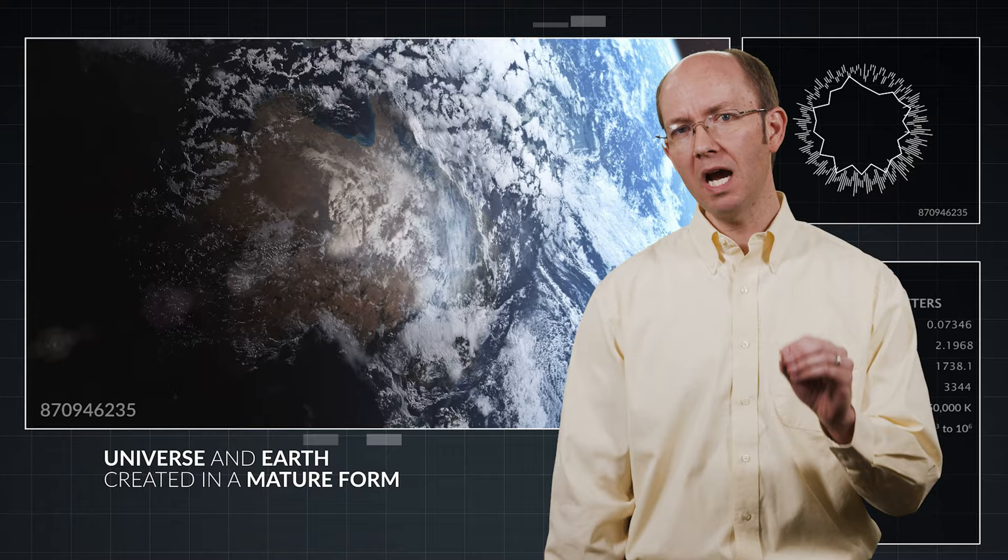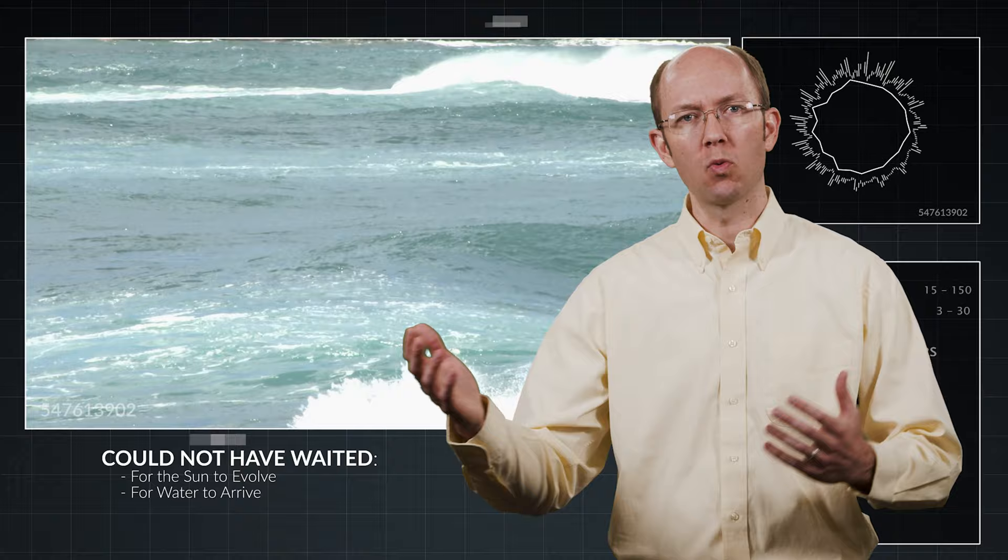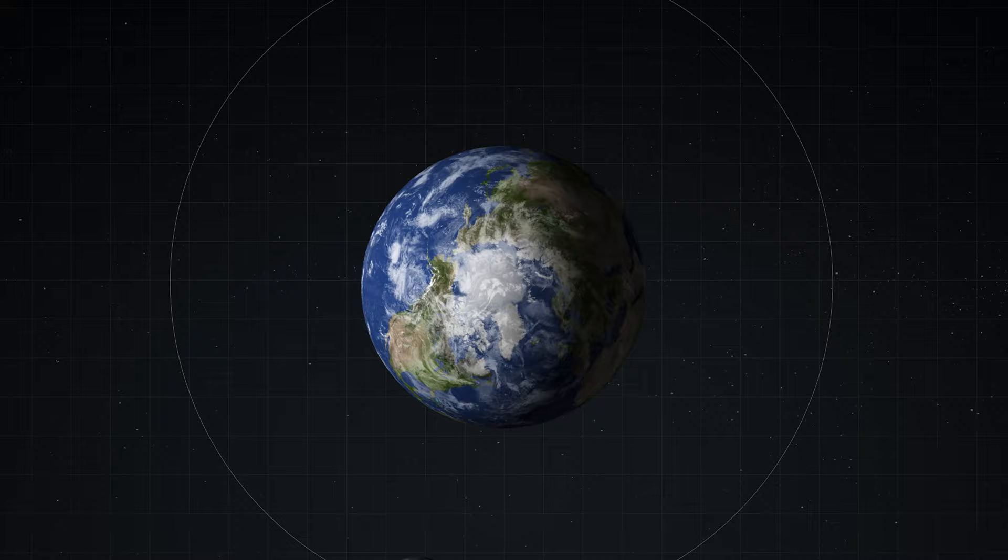And for life on Earth, our observation of its design tells us that life could not have waited billions of years for the sun to evolve, for water to arrive or the atmosphere to stabilize. Rather, all of the processes on Earth are so interdependent and fine-tuned that they must function together.